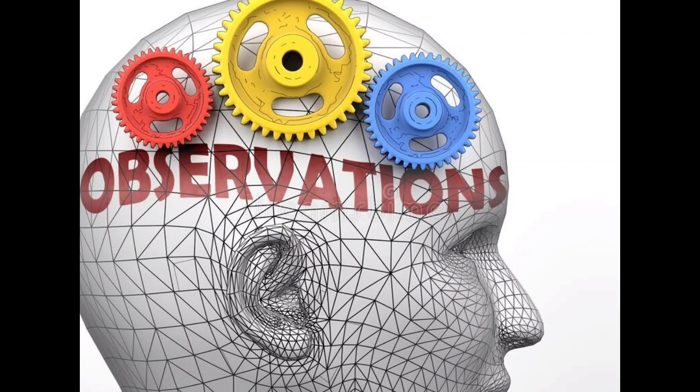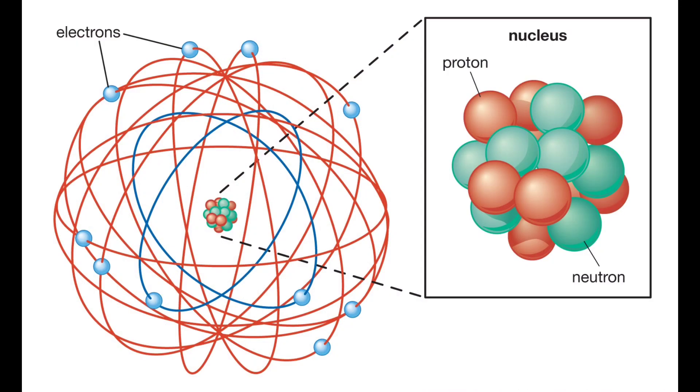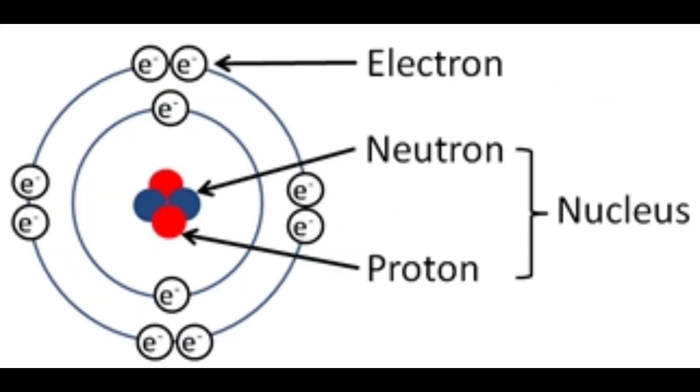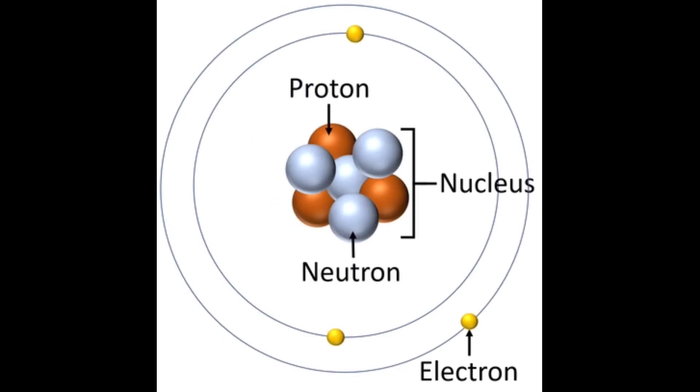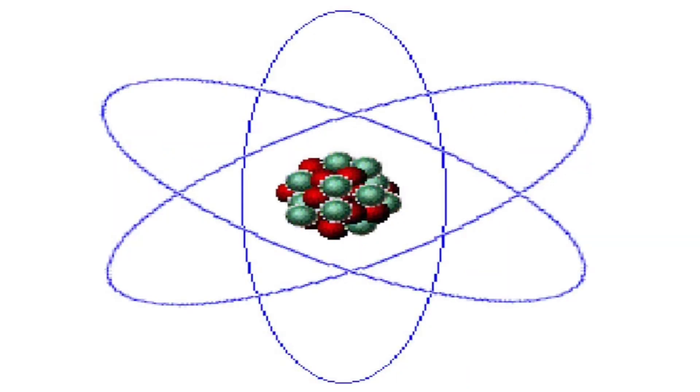On the basis of the observations and conclusions, Rutherford proposed the nuclear model of atom. According to his model, there is a positively charged spherical center in an atom called the nucleus. Nearly all the mass of an atom resides in the nucleus, that is protons and neutrons are packed into it. The electrons revolve around the nucleus in very well defined orbits. Thus most of the part of an atom is empty. The size of the nucleus is very small as compared to the size of an atom.